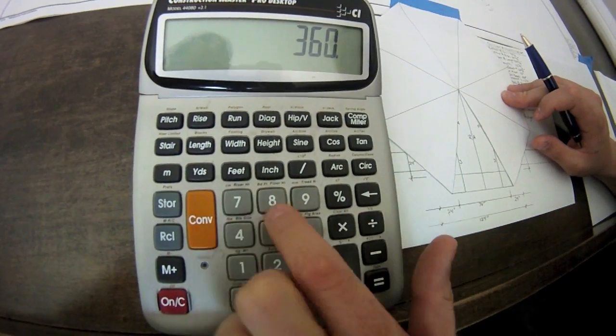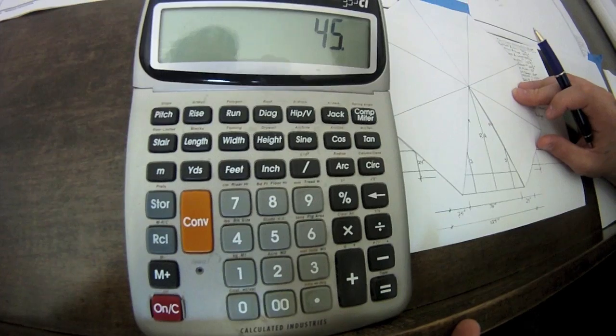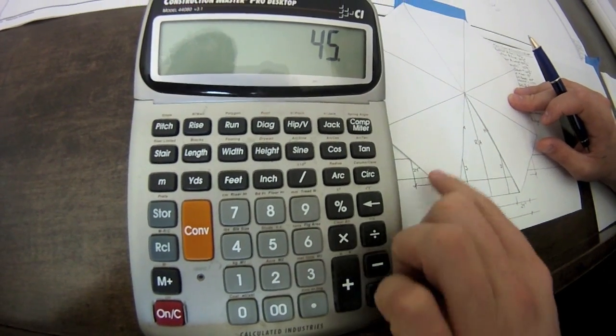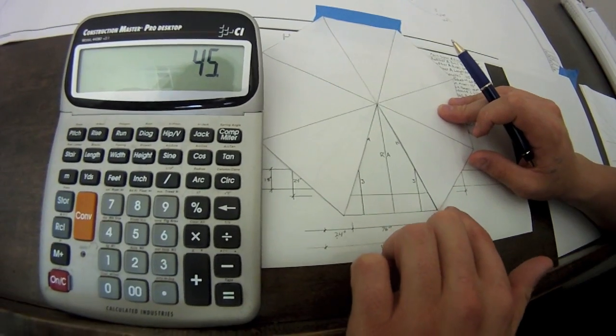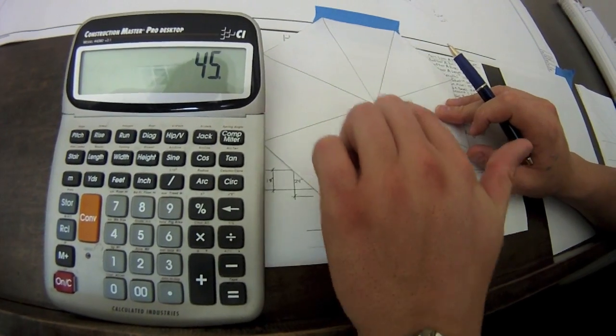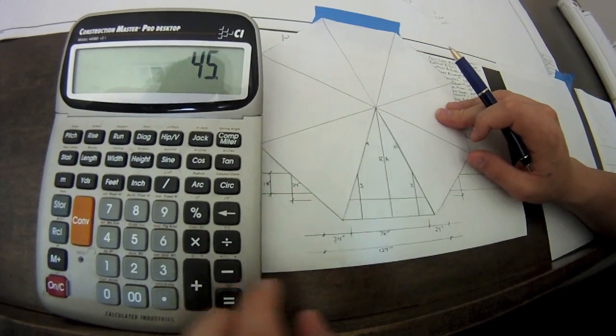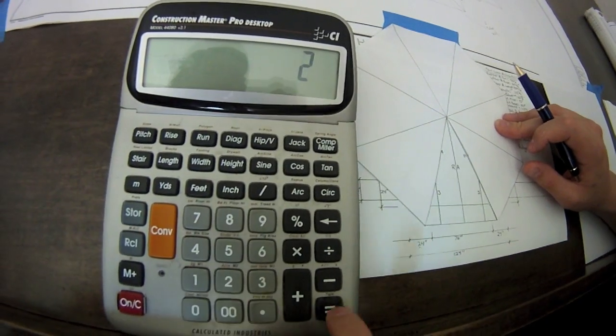So what you do is you would divide it by eight and that equals 45. So that shows that the walls run at a 45 degree angle from here to here. But the hips, they actually run and they divide that angle in half because of the way they run.